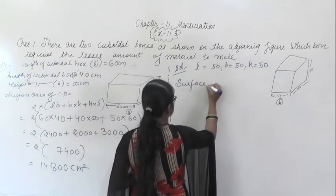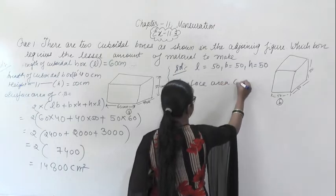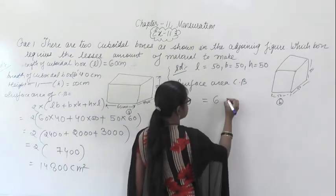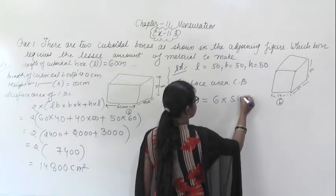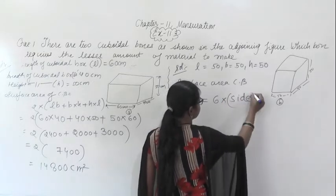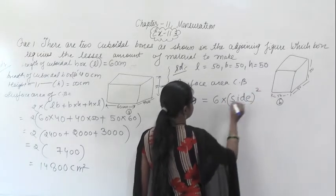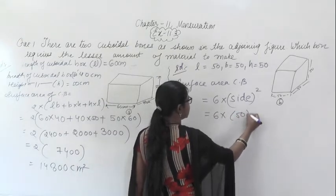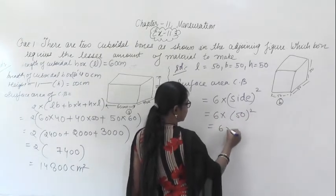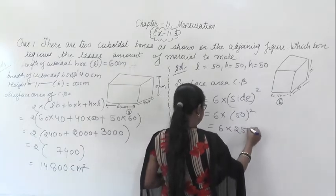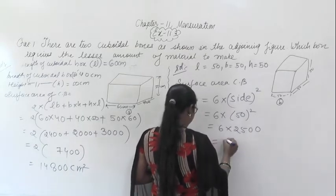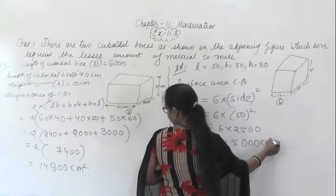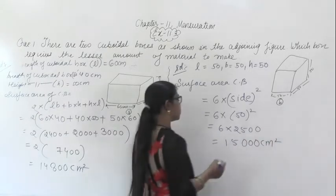Since all sides are equal, the surface area of this cuboidal box equals 6 into side squared, which is 6 into 50², that is 6 into 2500, giving 15000 centimeter square.